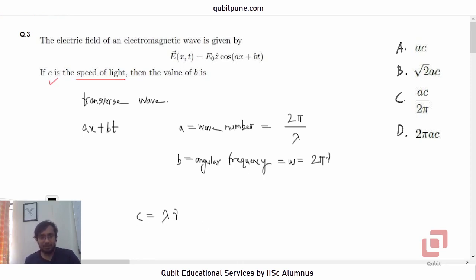So let us now replace λ by an expression involving a. So how much will λ be? 2π by a. 2π by a into—now let us go to ν. What is ν? If ω is 2πν, then this ν must be ω upon 2π, or b upon 2π. b upon 2π.